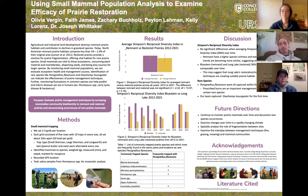These small mammals are vital to these ecosystems, consuming plant material and vertebrates, dispersing seeds, and being prey sources for larger species. By monitoring these populations, we can evaluate ecosystem health and management success. Identification of rare species like Perognathus flavescens and Neotoma leucogaster can indicate the effectiveness of prairie management techniques. Furthermore, monitoring fluctuations in common species can help predict and inform diseases we see in humans, such as the Peromyscus species that carry both Lyme disease and hantavirus.